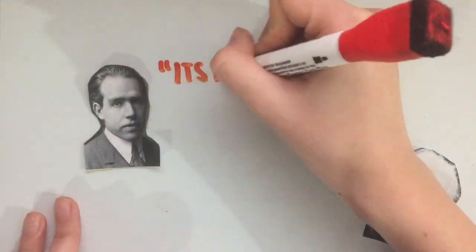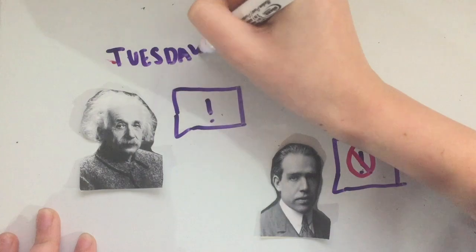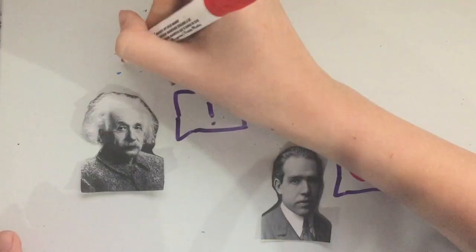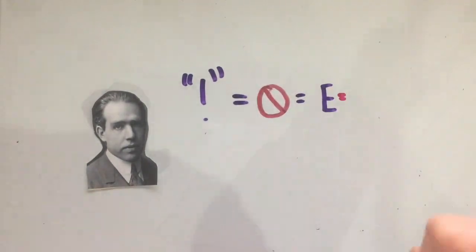Each day, Einstein would give a thought experiment to disprove the Heisenberg uncertainty principle, and each day Bohr would prove him wrong, until eventually he won the argument by using Einstein's own theory of relativity against him, as he forgot to factor it into his experiment.